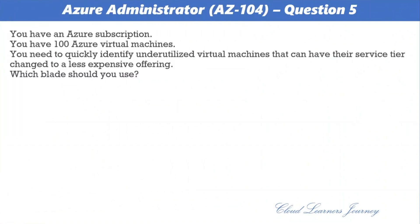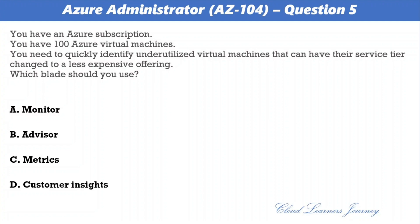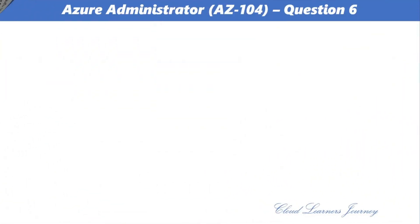Question number five. You have an Azure subscription with 100 Azure virtual machines. You need to quickly identify underutilized virtual machines that can have their service tier changed to a less expensive offering. Which blade should you use? Options: a) Monitor, b) Advisor, c) Metrics, d) Customer Insights. The correct option is b) Advisor. Advisor helps you optimize and reduce your overall Azure spend by identifying idle and underutilized resources. You can get cost recommendations from the Cost tab on the Advisor dashboard.